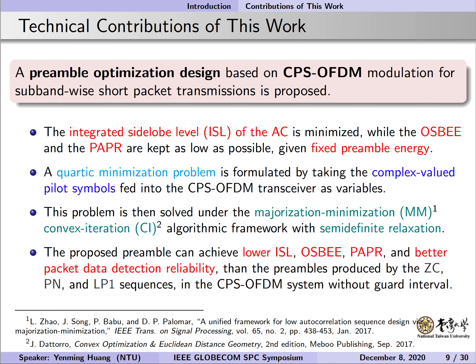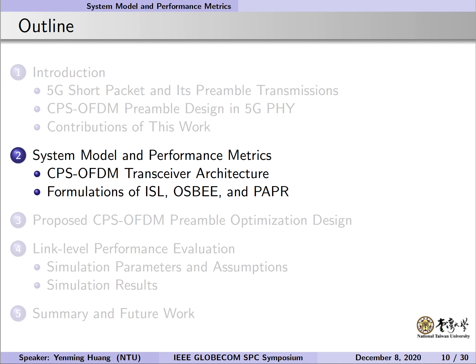We briefly point out the contributions of this work. The main point is that we propose a preamble optimization design based on CPS-OFDM modulation for subband-wise short packet transmissions. The ISL is minimized while the OSBE and PAPR are kept as low as possible given fixed transmit energy. To this end, a practical minimization problem is formulated by taking the complex-valued pilot symbols before the CPS precoder as variables. Then the problem is solved by the proposed majorization-minimization convex iteration algorithm with the help of semi-definite relaxation. Compared to the preambles produced by ZC and NLP sequences, our proposal can achieve lower ISL, OSBE, PAPR, and also better packet data detection reliability.